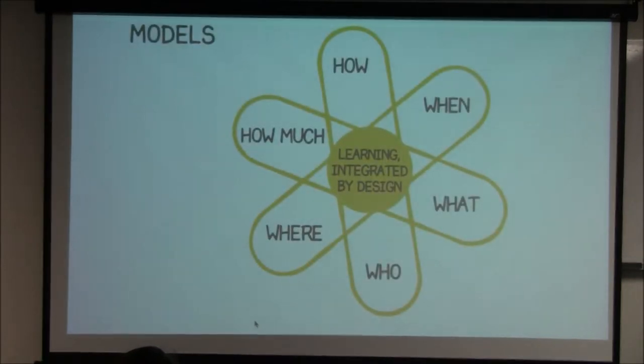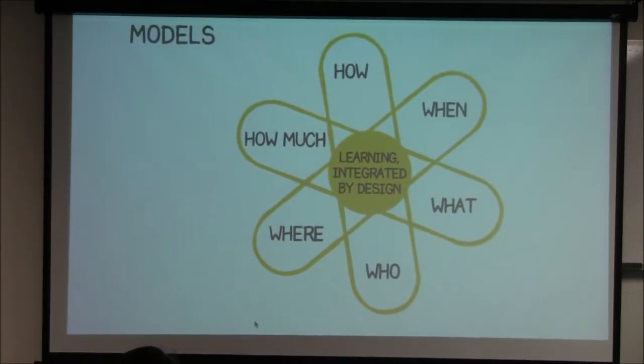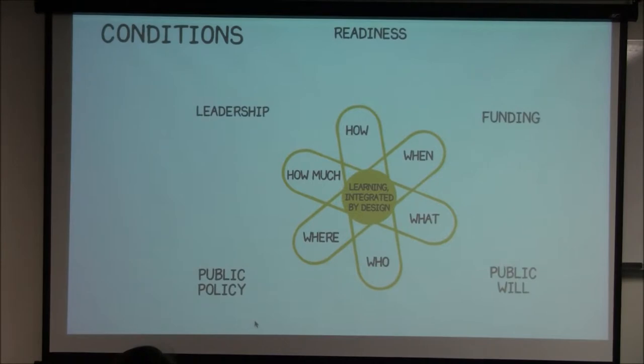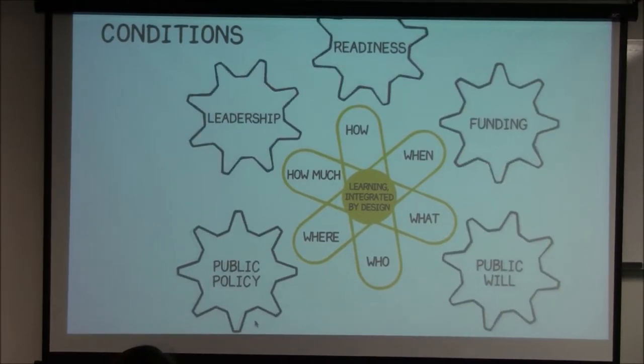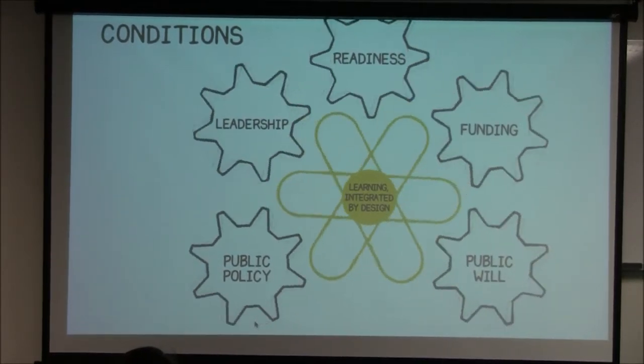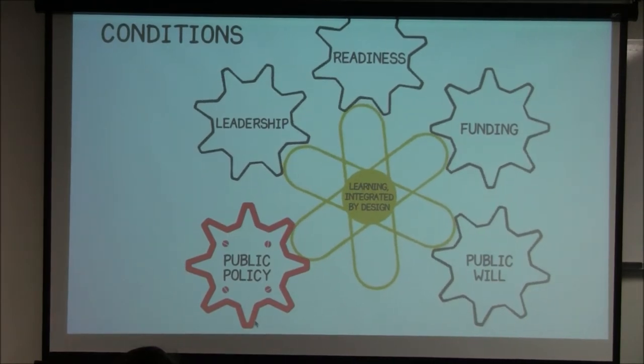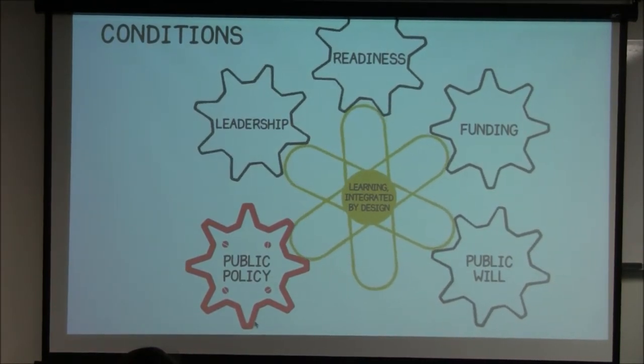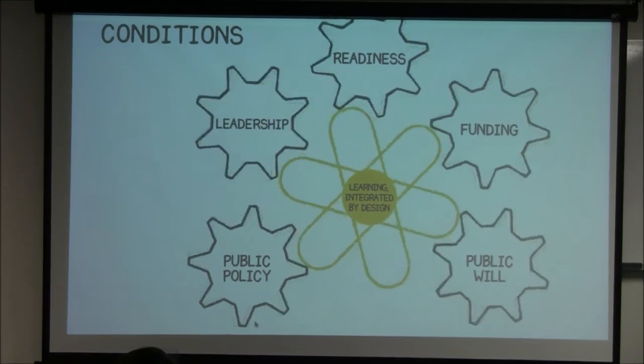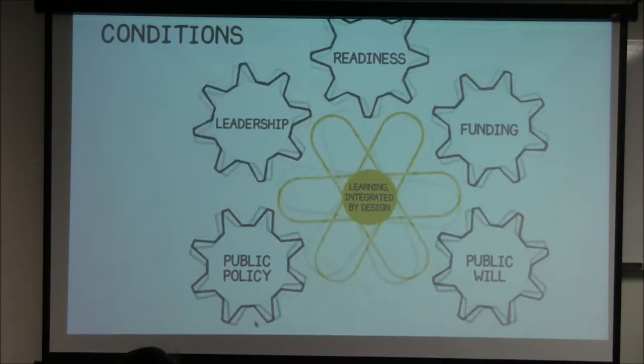And of course, kids don't power this system on their own. For every model, a set of outside conditions can either block its progress or help it take off and really work for kids. Without the right conditions, better models cannot take hold and scale. But just imagine what the future of learning would look like if we aligned these new models with the conditions that help them succeed.